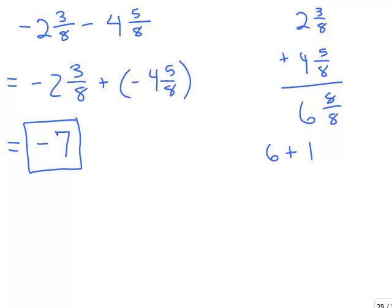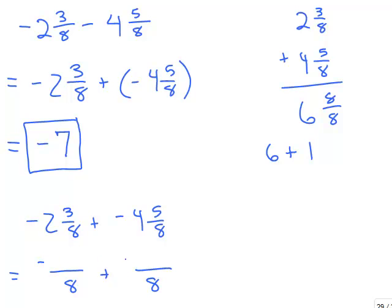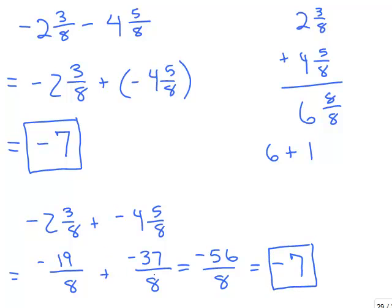You could also do this with improper fractions. Starting from negative 2 and 3 eighths plus negative 4 and 5 eighths, both are negative. The numerator of the first is 8 times 2 plus 3, which is 19. The numerator of the second is 8 times 4 plus 5, which is 37. Adding the numerators gives negative 56 over 8. Dividing a negative by a positive, my answer is negative, and 56 divided by 8 is 7. You get the same answer either way — keeping mixed numbers or converting to improper fractions.